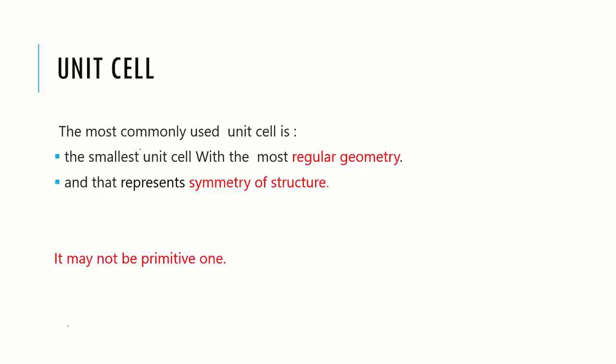There can be several valid unit cells for a certain lattice. In order to make it easier to deal with, it is often useful to describe a unit cell that is not primitive. The most commonly used unit cell is the smallest unit cell with the most regular geometry and that represents symmetry of structure. It may not be primitive one.